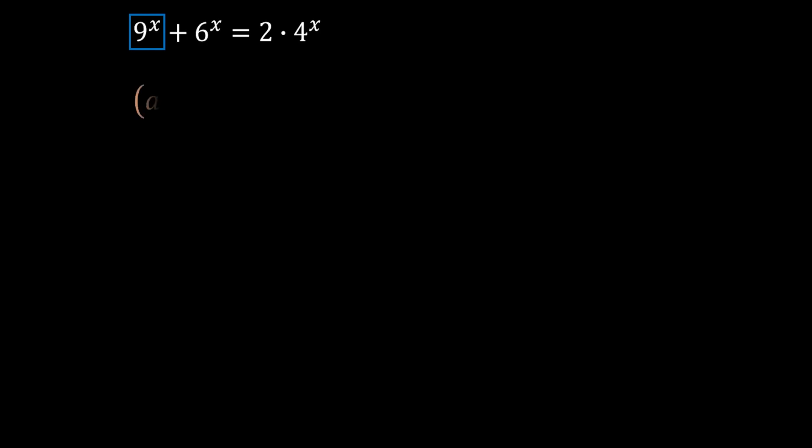So let's take a look at the first term, 9 to the power of x. Here we will use the exponential rule called power to the power, which says that a to the power of b to the power of c is equal to a to the power of b times c. We can simplify 9 as 3 squared, and using this rule we get that the result is 3 to the power of 2x.